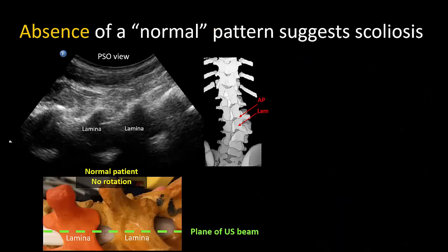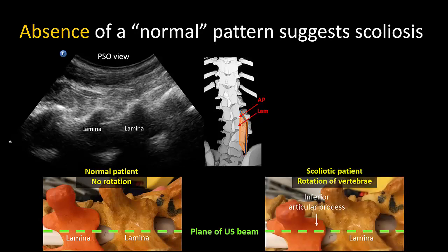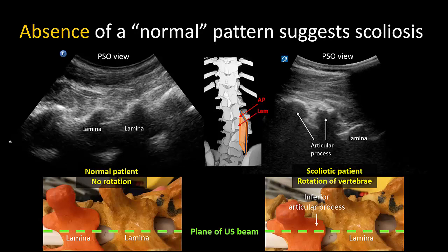Note that the classic repeating sawtooth pattern of the parasagittal oblique view may not be seen in scoliosis because of the rotation of the spine. When the vertebrae rotate on each other, the ultrasound beam may now cut through an articular process rather than the lamina. This will be evident by a rounded shadow rather than the sawtooth-shaped one, and is yet another clue that scoliosis is present. This underscores the importance of learning to recognize normal anatomy.